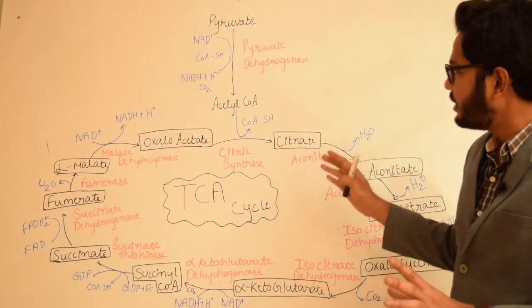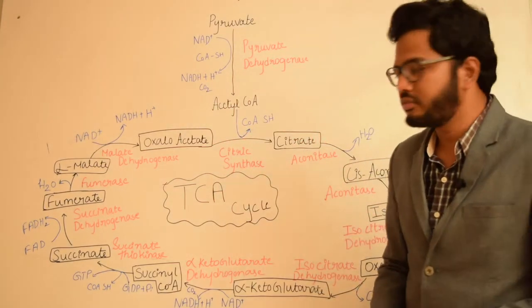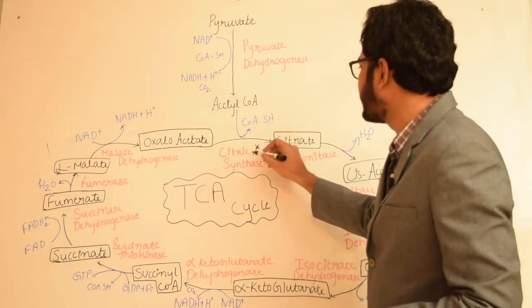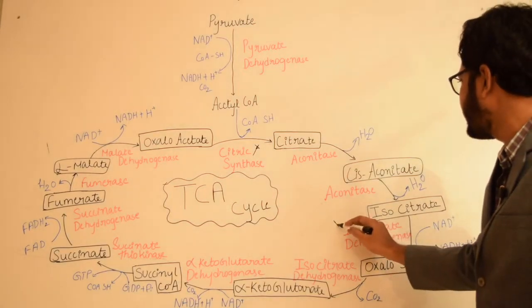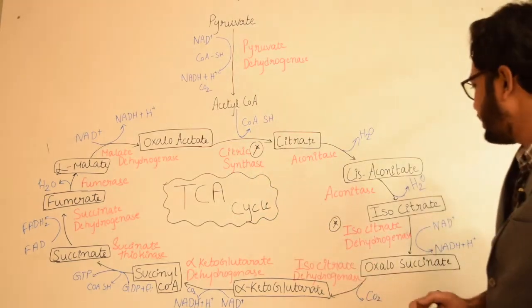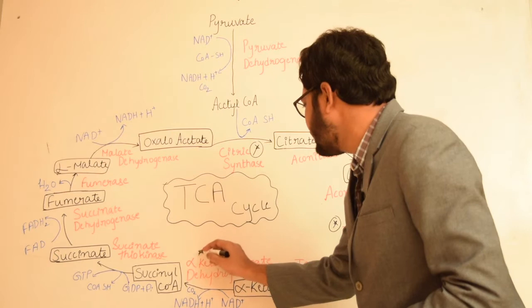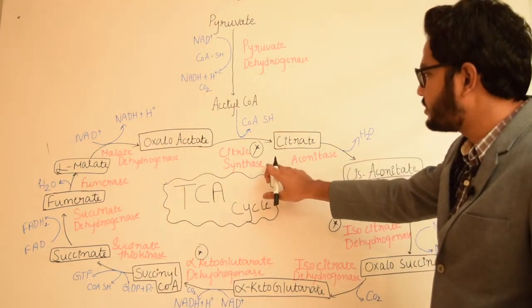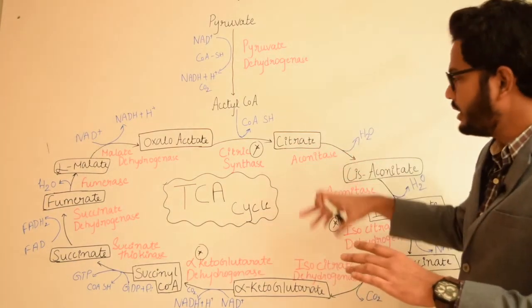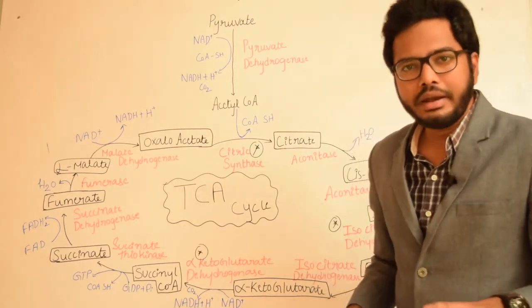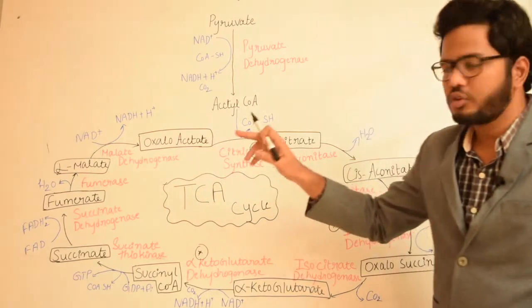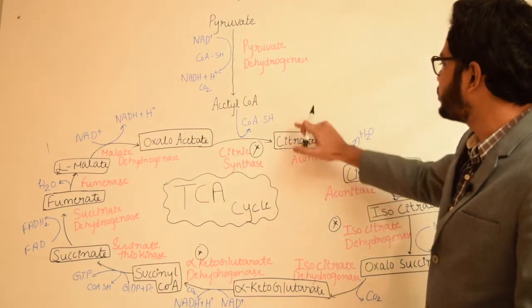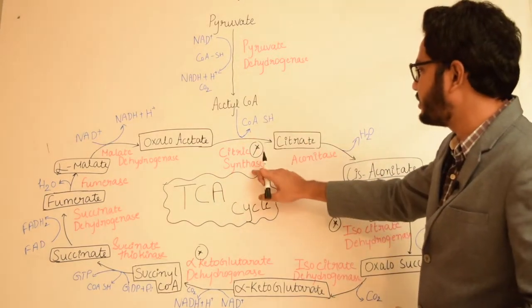There are three important irreversible reactions in the cycle, controlled by three enzymes: citrate synthase, isocitrate dehydrogenase, and alpha-ketoglutarate dehydrogenase. Citrate synthase is considered the pace-setting enzyme because it maintains the pace of the reaction depending on availability of acetyl-CoA and oxaloacetate. Greater amounts of acetyl-CoA and oxaloacetate stimulate citrate synthase, whereas excess citrate inhibits it through feedback inhibition.